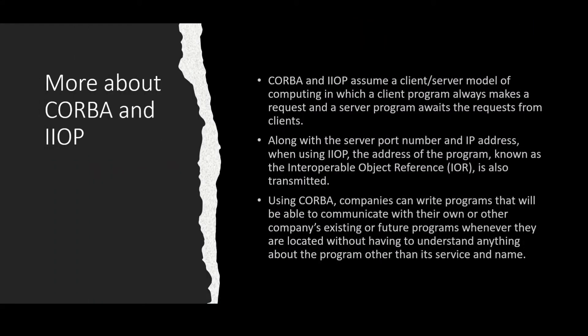CORBA and IIOP assume a client-server model of computing, in which a client program always makes a request and a server program awaits the request from the clients. Along with the server port number and IP address, when using IIOP, the address of the program, known as the Interoperable Object Reference, or IOR, is also transmitted. Using CORBA, companies can write programs that will be able to communicate with their own or other companies' existing or future programs, wherever they are located, without having to understand anything about the program other than its service and name.